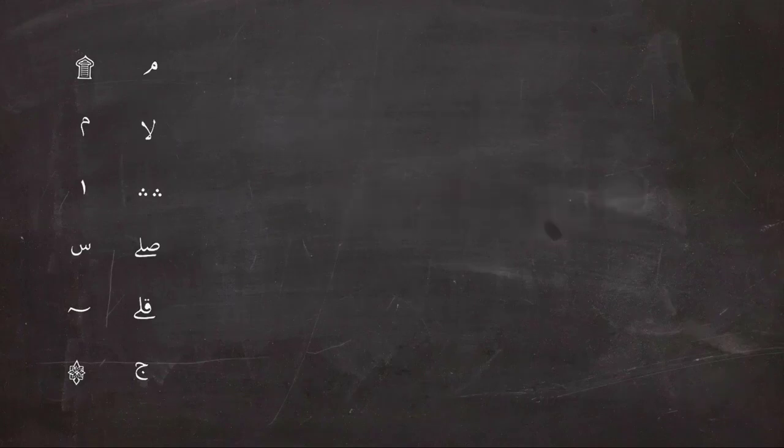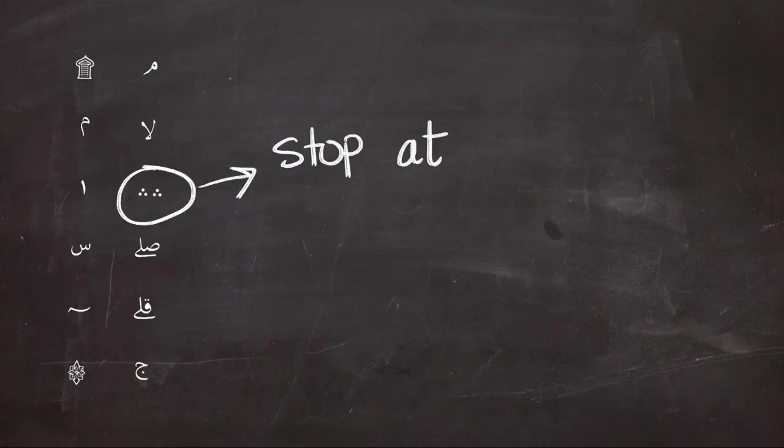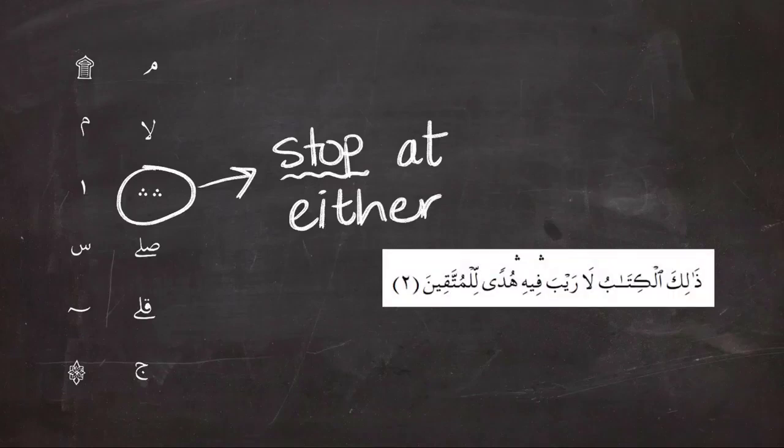The three dotted symbol means you can't stop at either of them, but you have to stop at one and not the other. So in the second ayah of Surah Al-Baqarah, you are allowed to stop at the first one or by stopping at the second one.